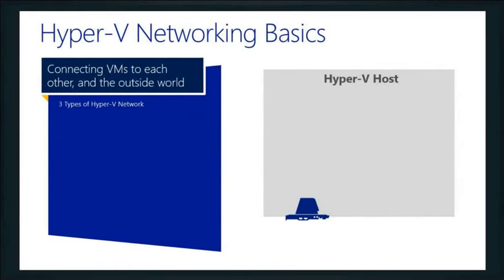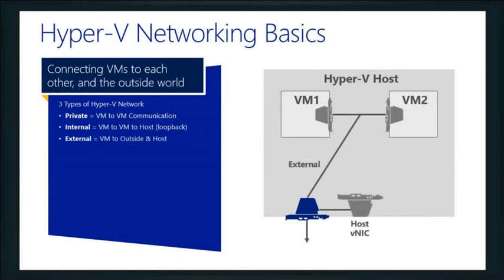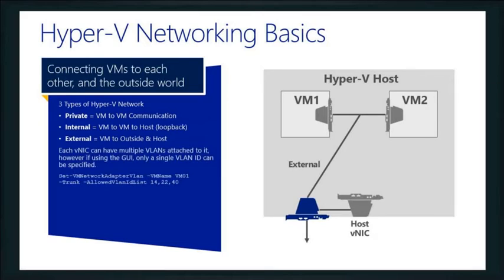Let's switch gears and talk about some of the Hyper-V networking basics. There are three main types of networks inside our Hyper-V-based switches: private, which allows VM-to-VM communication only; internal, which allows VM-to-VM and to the host — basically a host loopback; and external, which allows the virtual machine to access the outside world. You can even assign VLANs, though in the GUI you can only assign a single VLAN ID — using PowerShell you can assign multiple VLANs for those vNICs.